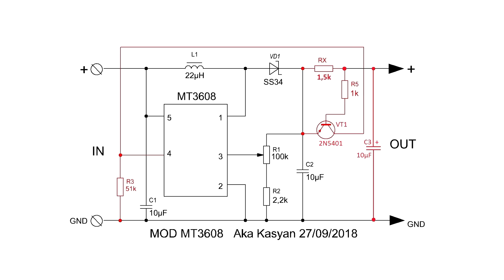If a load is connected to the output of the converter, a certain voltage drop is formed on the resistor. This is enough to trigger a low-power transistor. Through the open transistor to the 4th pin of the chip comes Plus. The converter starts and at its output we get the desired voltage. In our case, 9 volts.